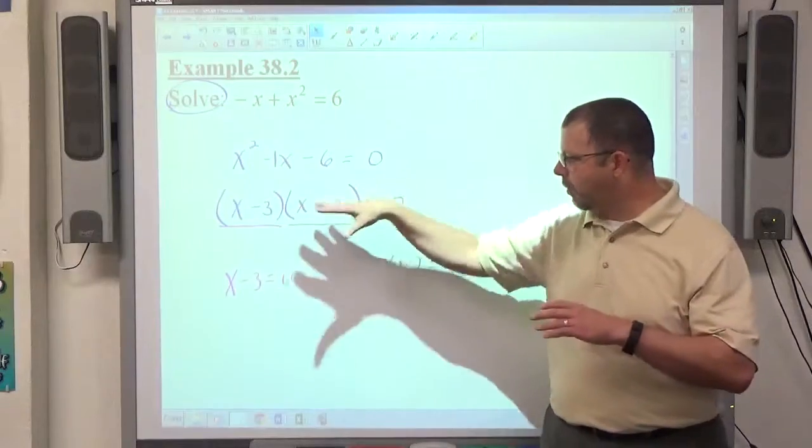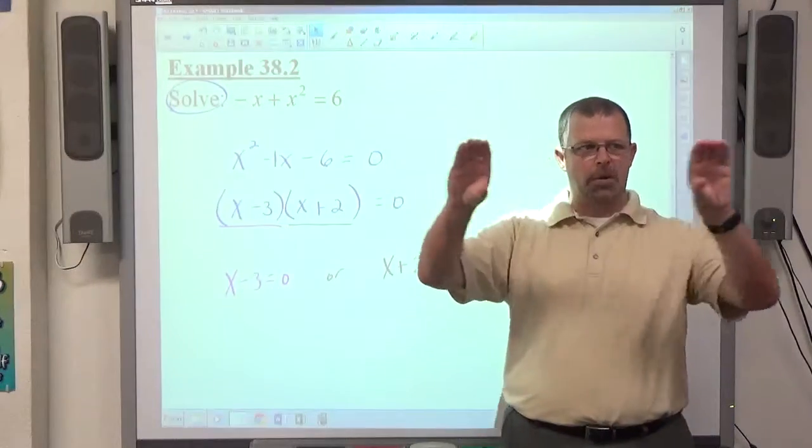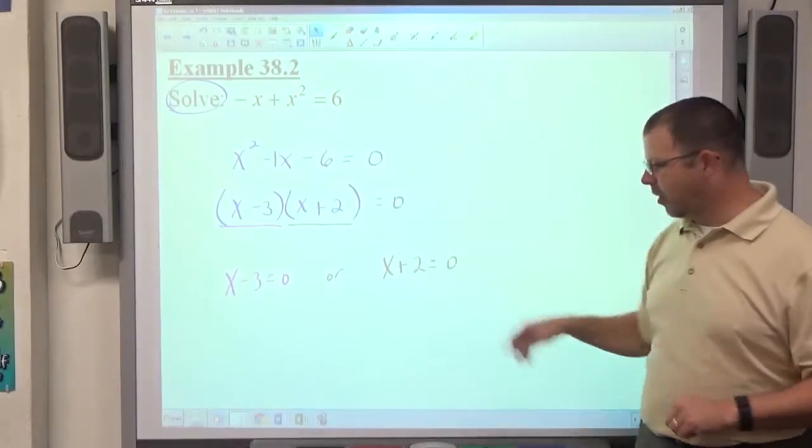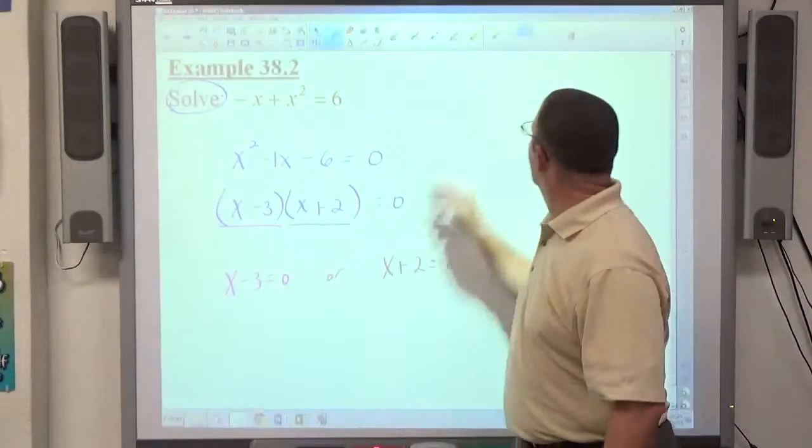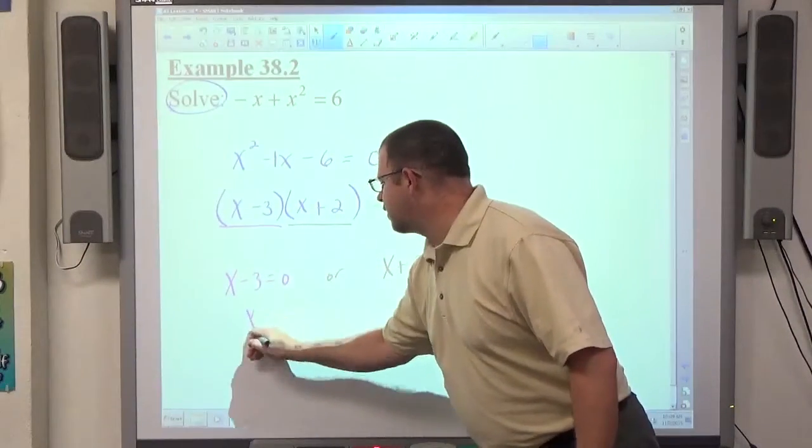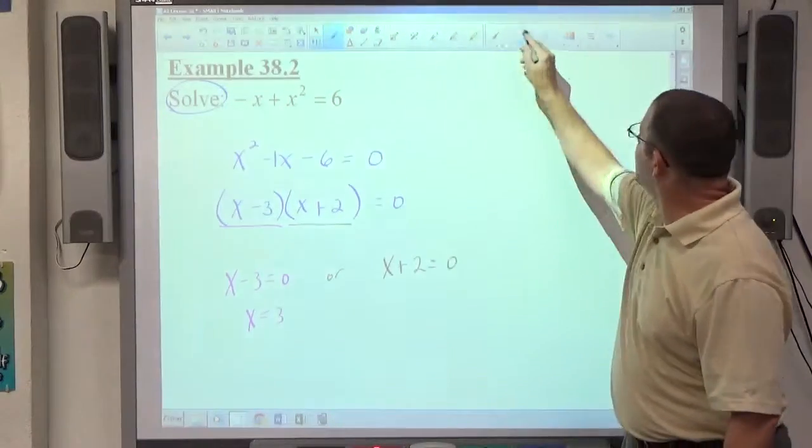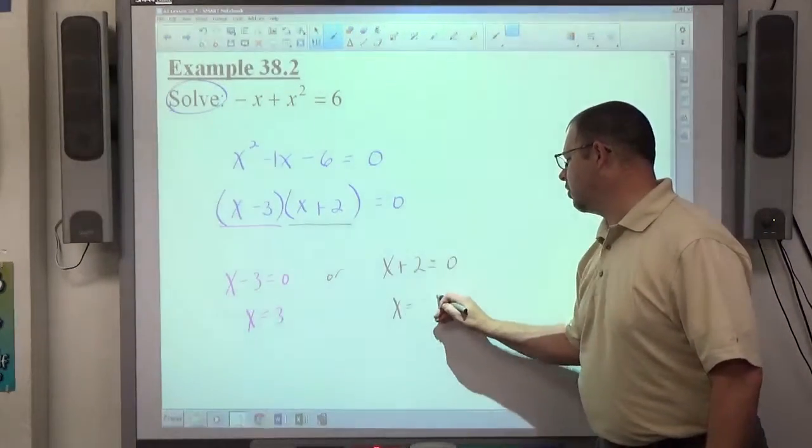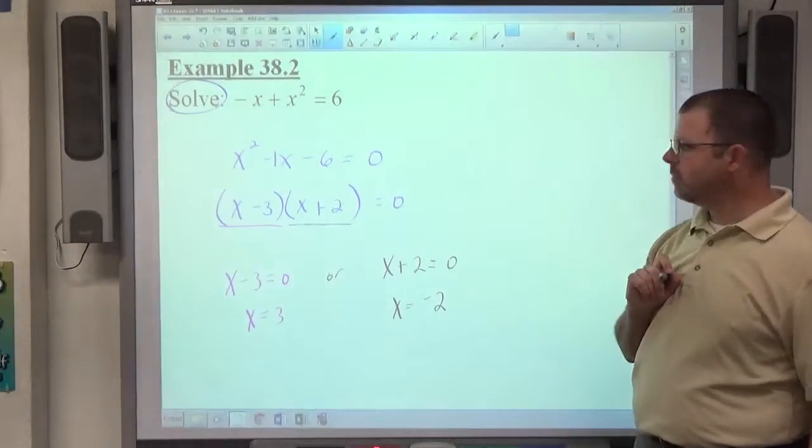So, by breaking it into this factored form, you can split it apart into two simple equations. If either one of those equations is true, we get a true statement. This gives me x equals 3, this other one gives me x equals negative 2.